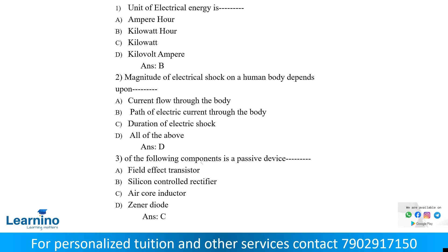Which of the following components is a passive device? An active device is one that produces energy such as voltage or current. A passive device is for storage and maintenance of energy. Transistors and rectifiers are active elements. Inductor, capacitor, and transformer are passive devices. The answer is C.